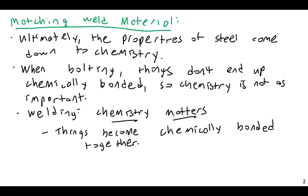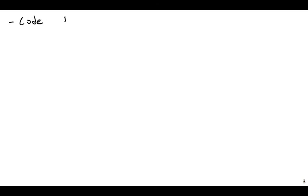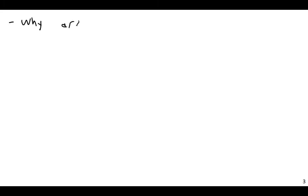With concrete, you can't get that kind of chemical bond, so you need mechanical bonds — development length, extending rebar from one member into another. But with steel you can use welding, and welding comes down to chemistry. It is exceptionally important to use compatible material.